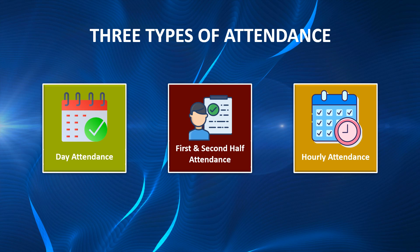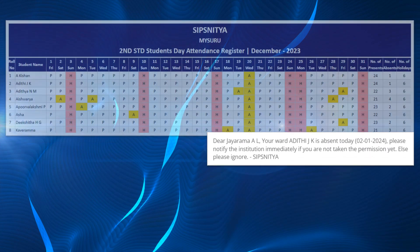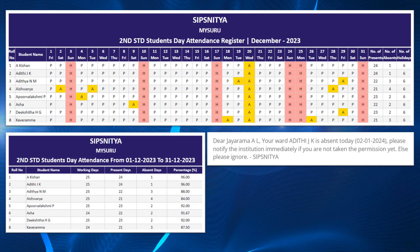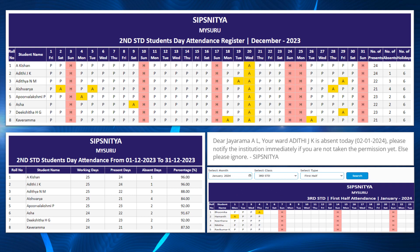Both options provide flexibility for teachers to accurately record attendance based on students' daily schedules. Once marked, the attendance notification will be sent to the Parent app itself. The software compiles this data to generate comprehensive attendance reports and analyses for school administration.